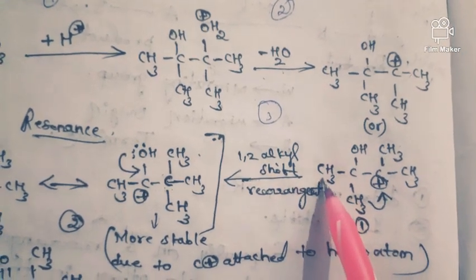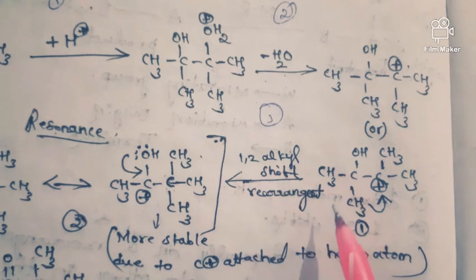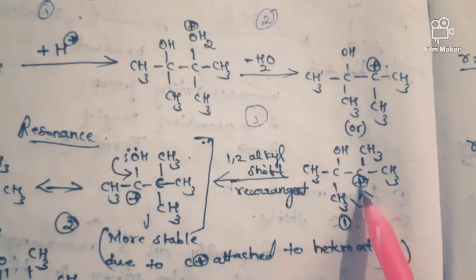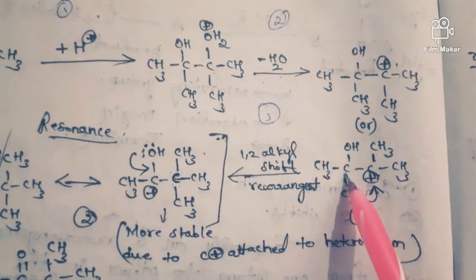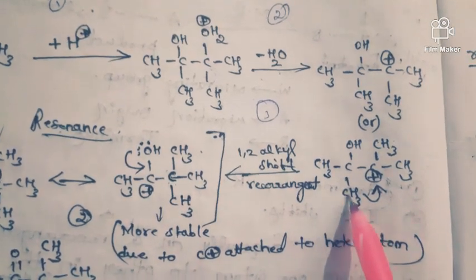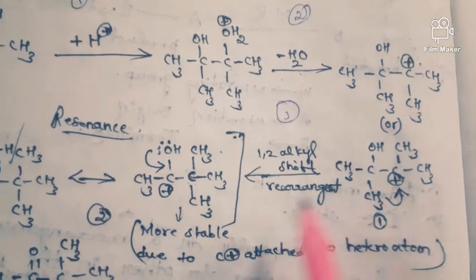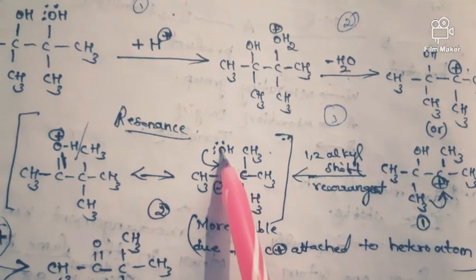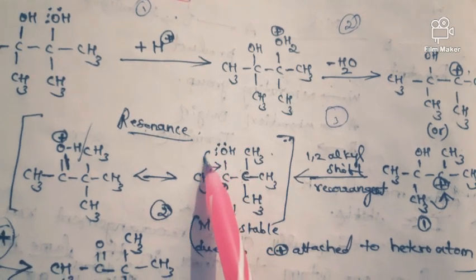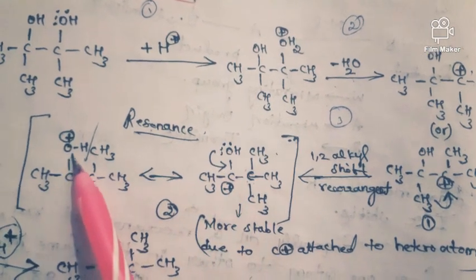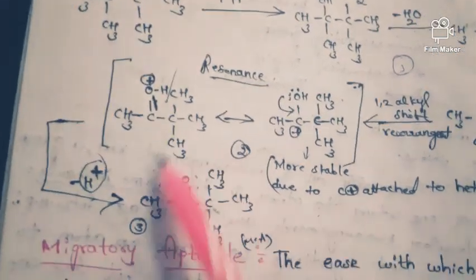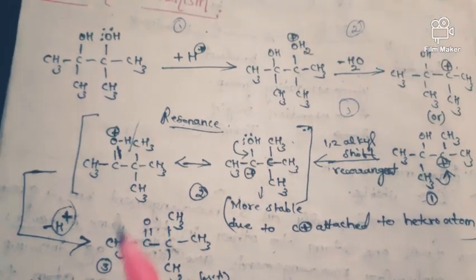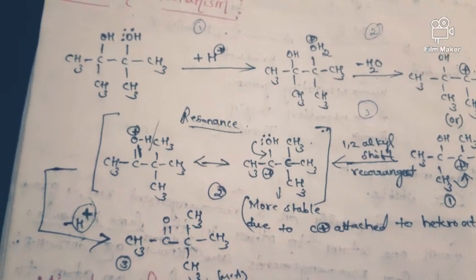Now, 1,2-alkyl shift occurs — this is also called 1,2-alkyl rearrangement. The alkyl group shifts to the adjacent carbon, so that carbon gets the positive charge. Then resonance occurs: the oxygen has two lone pairs of electrons, and the lone pair shifts to form a bond. Finally, loss of H+ occurs and we get the ketone — the pinacolone. This is the pinacol-pinacolone rearrangement.